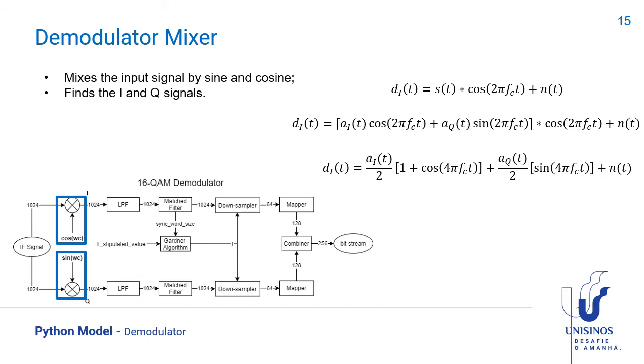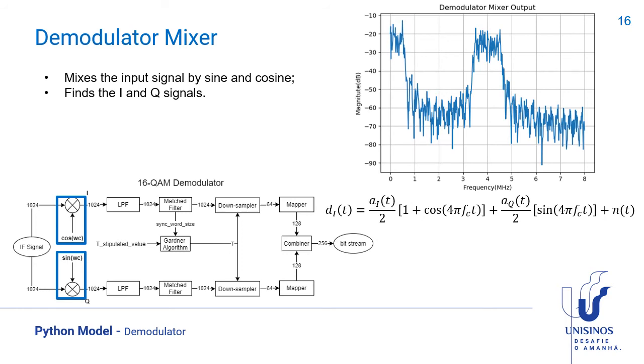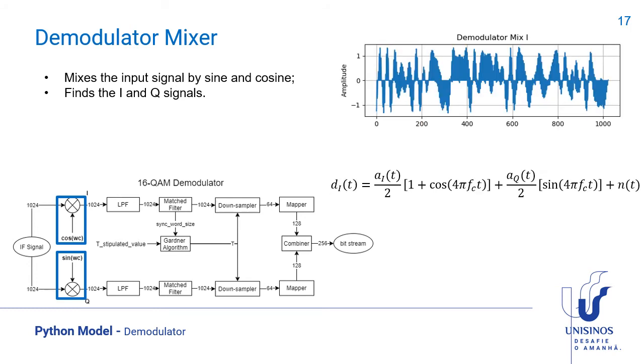The quadrature signal has just the AC component. It's very clear to see both components in this FFT and this graphic of the in-phase signal in the time domain.